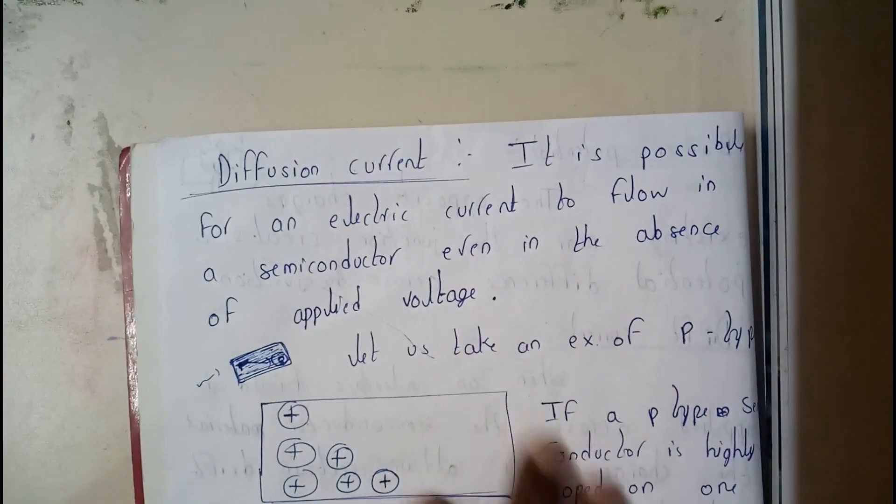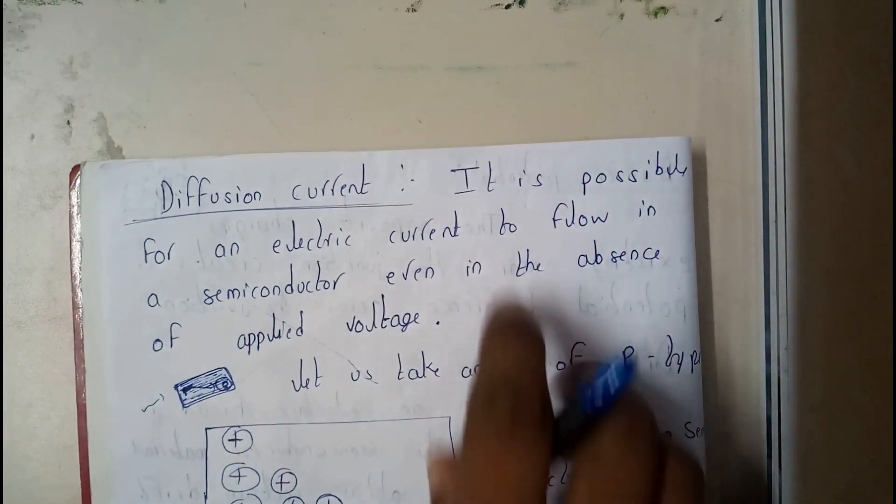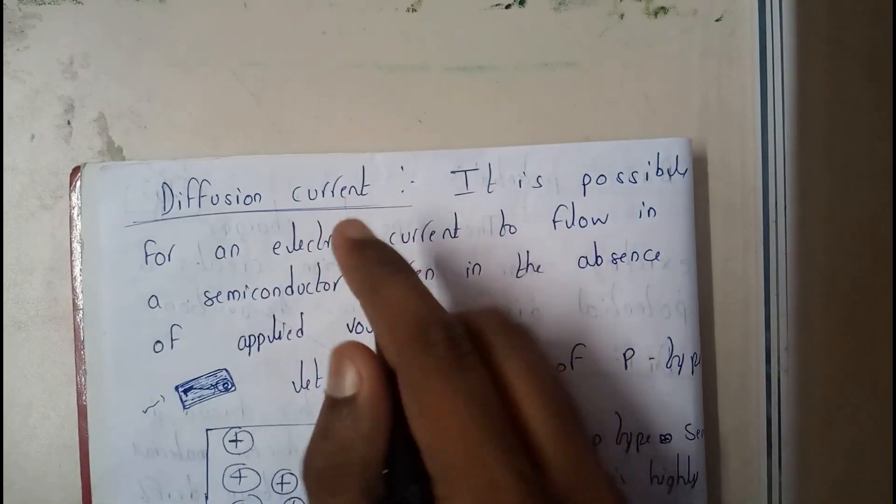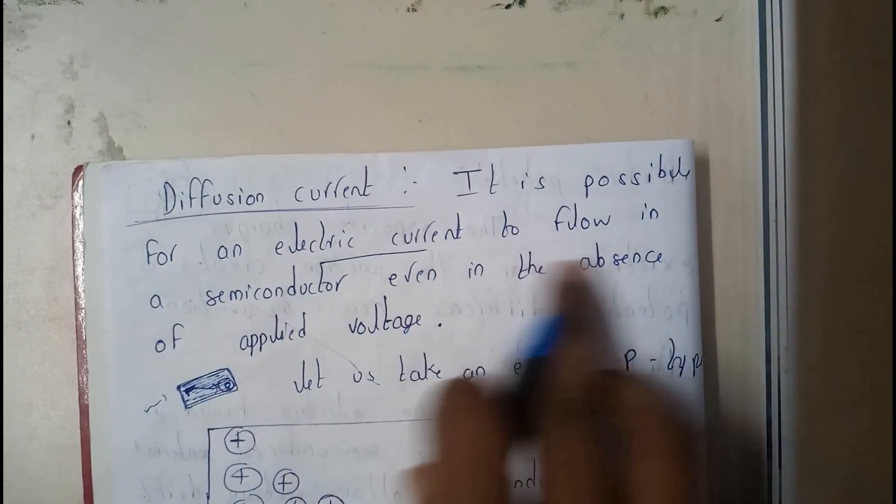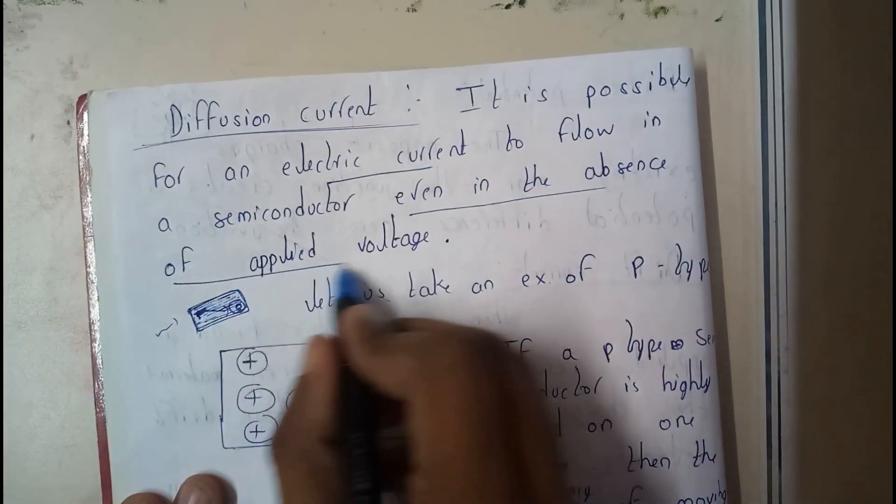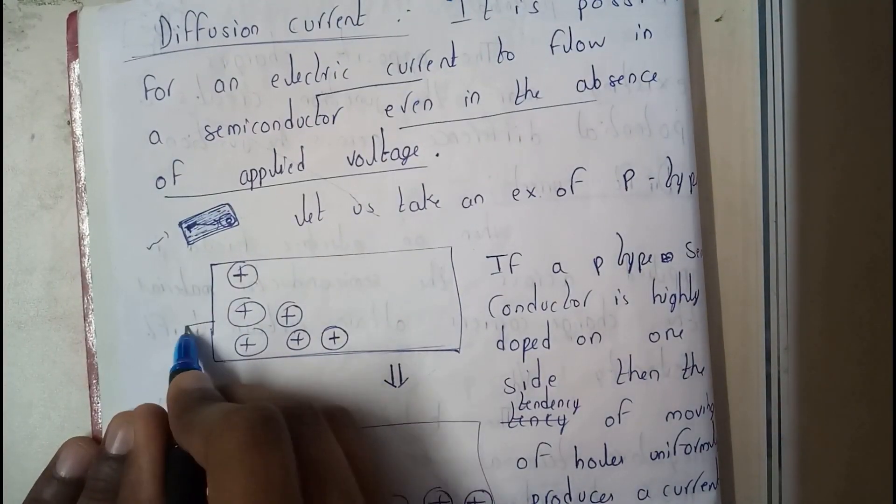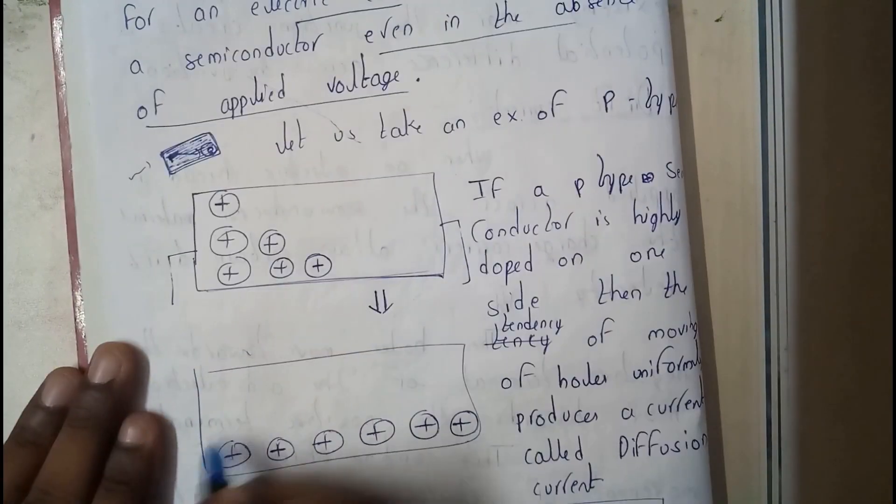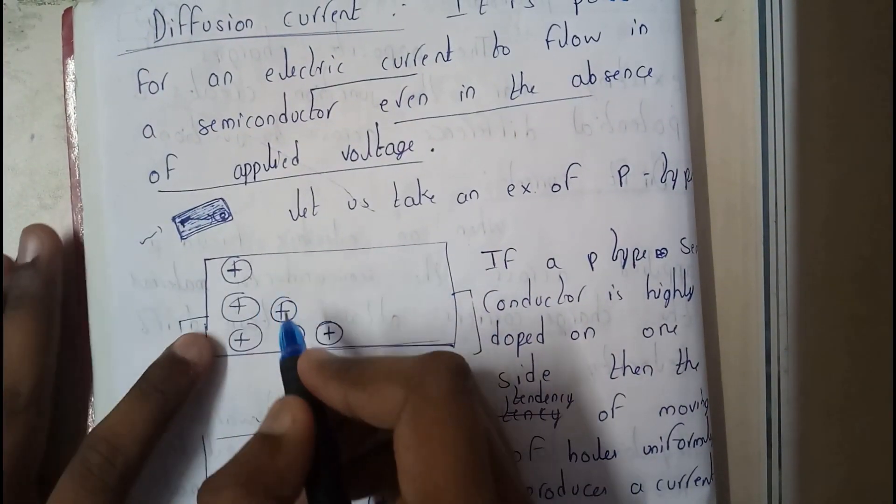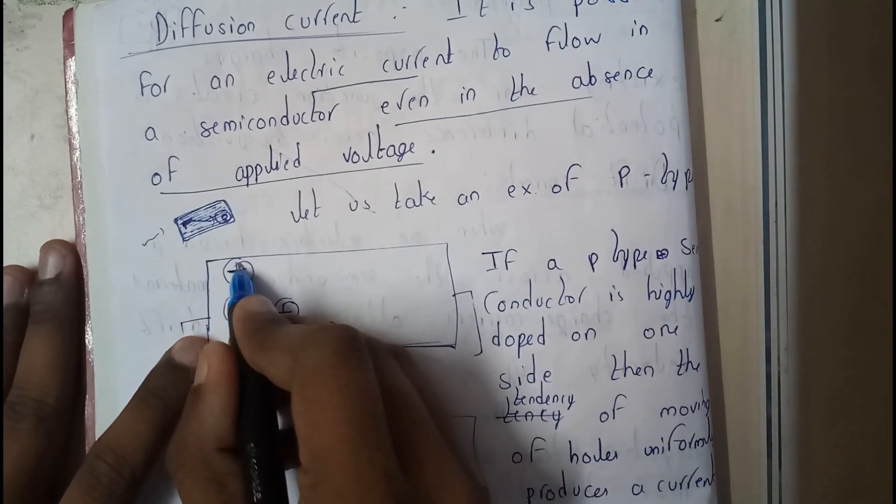Basically, diffusion current is possible for an electric current to flow in a semiconductor even in the absence of applied voltage. Here, we are not applying any voltage.